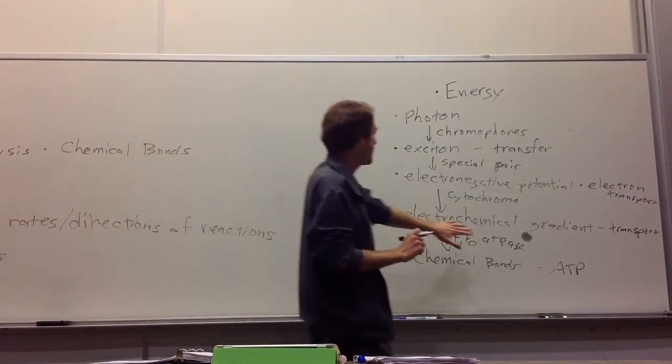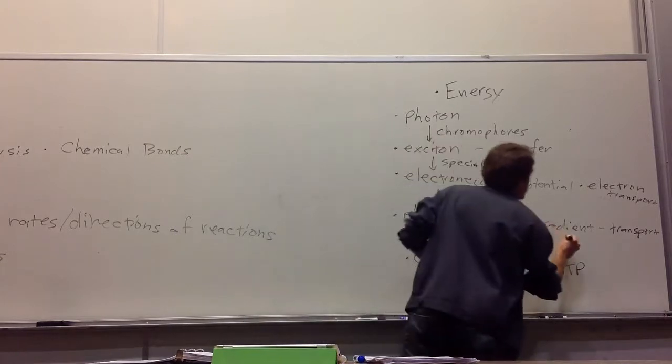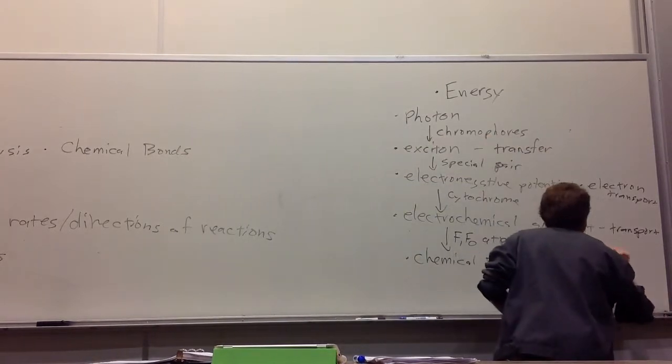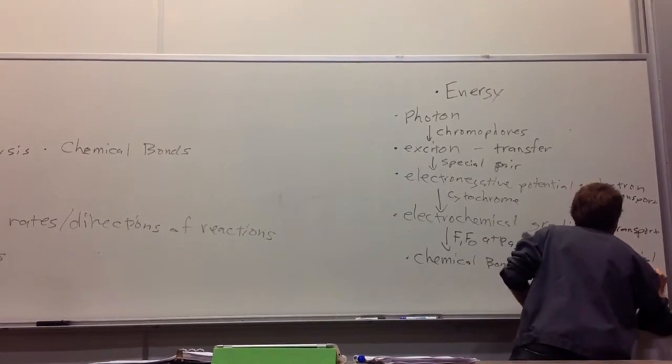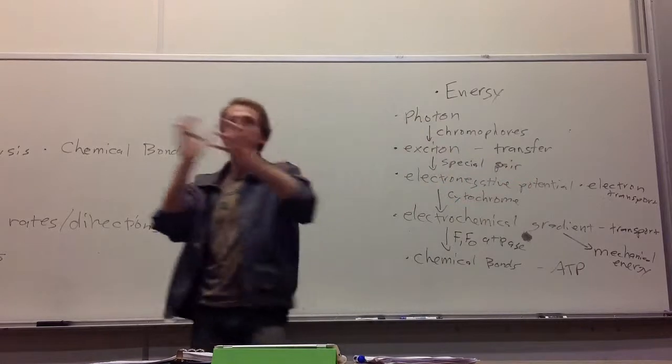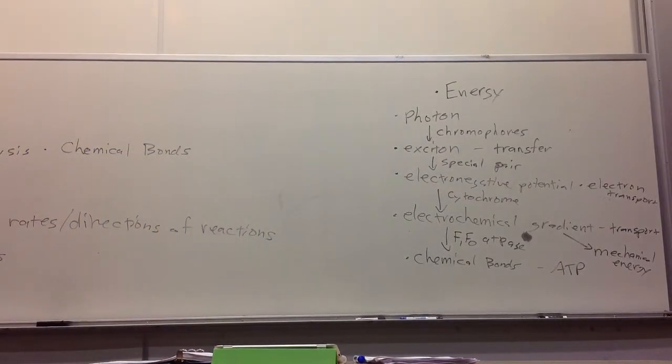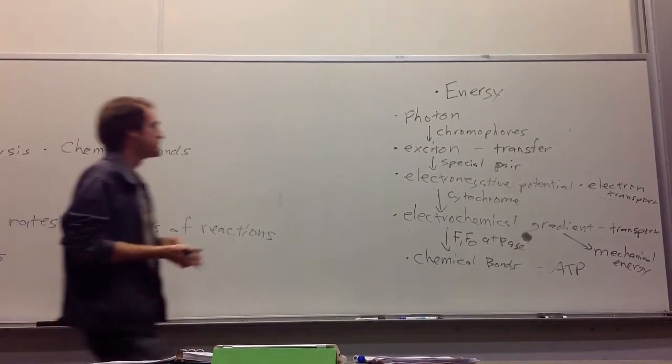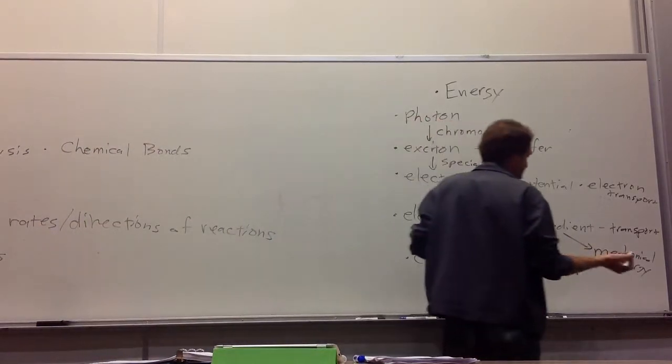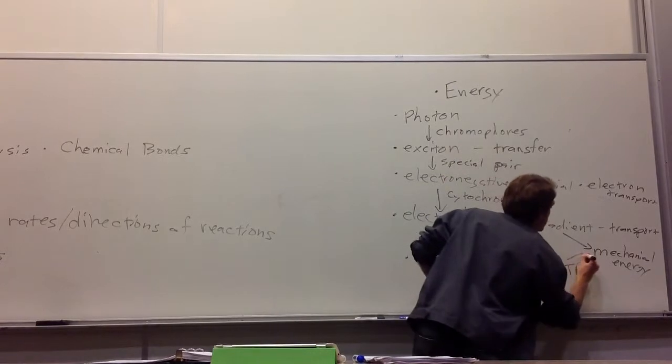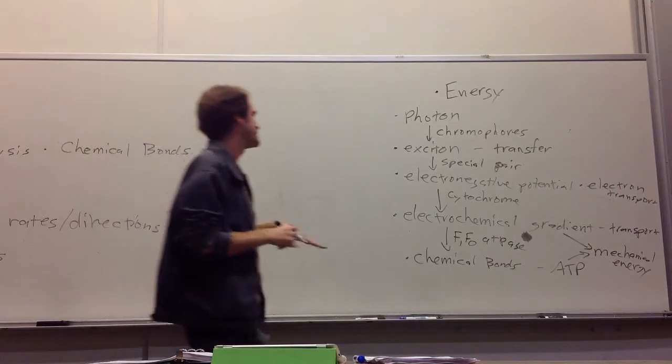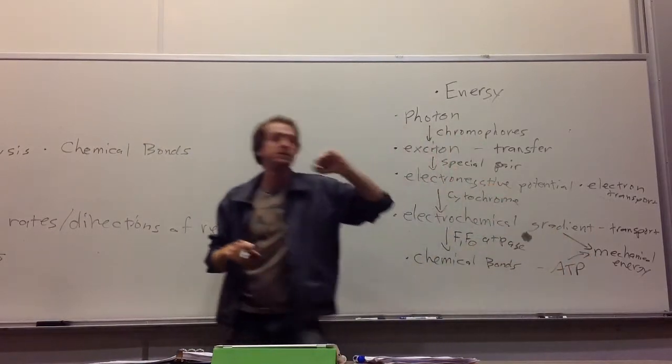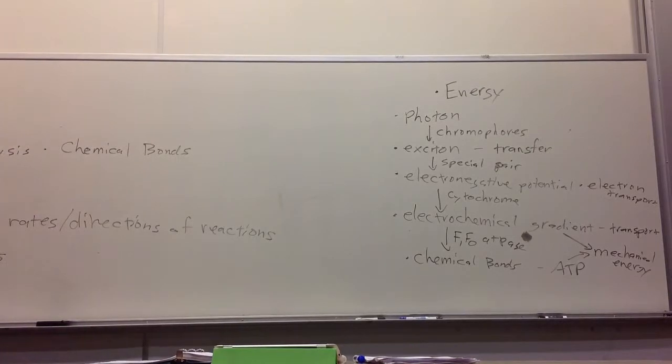We also learned that this electrochemical gradient, we gave one example of how this was turned into mechanical energy. That would be a change in conformation, something changing its shape or actually physically moving in space. And those of you that go on to study things like dynein and transport along actin filaments will learn that ATP can also be used to create mechanical energy, changes in shape and physical motions in proteins.